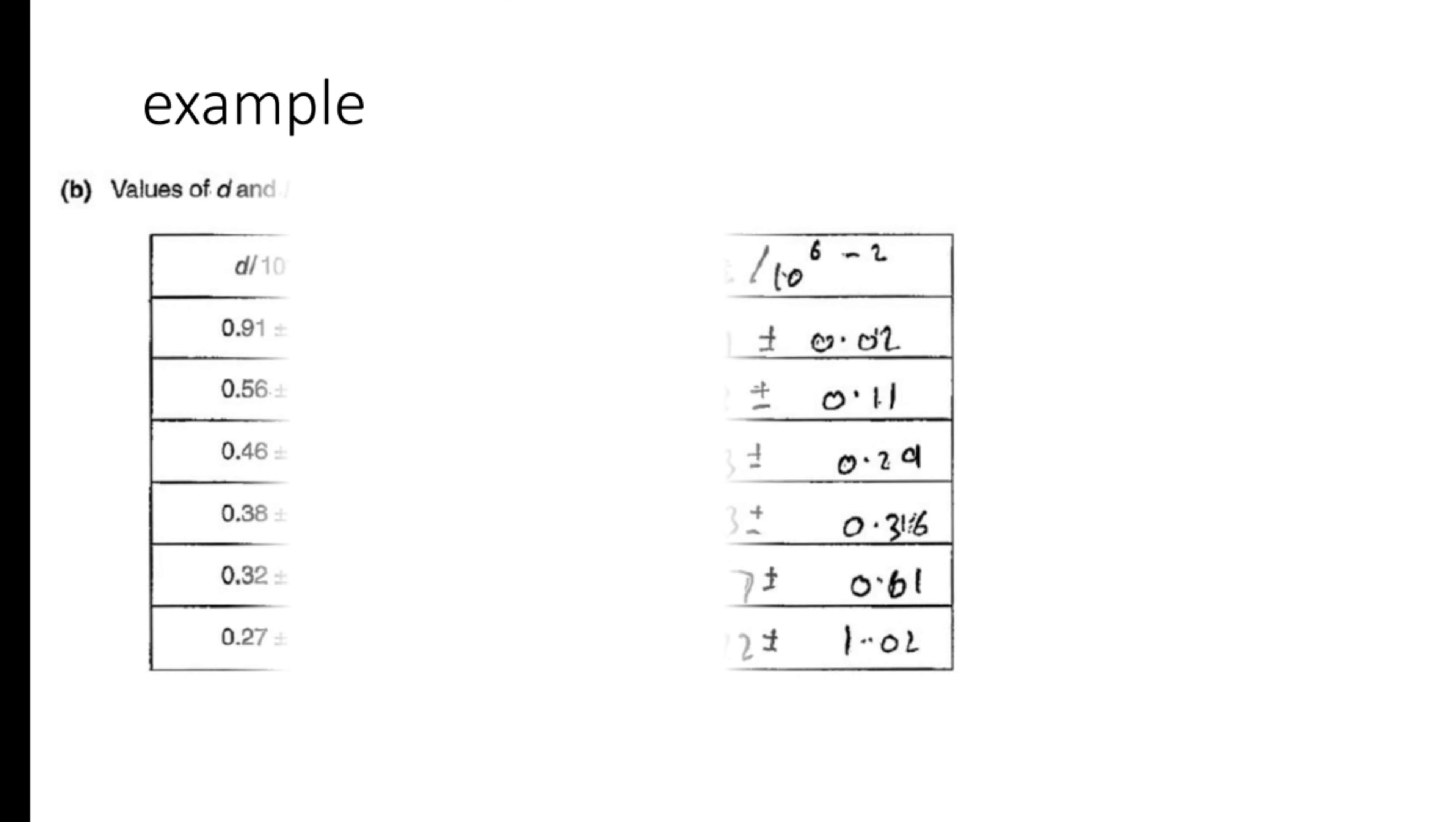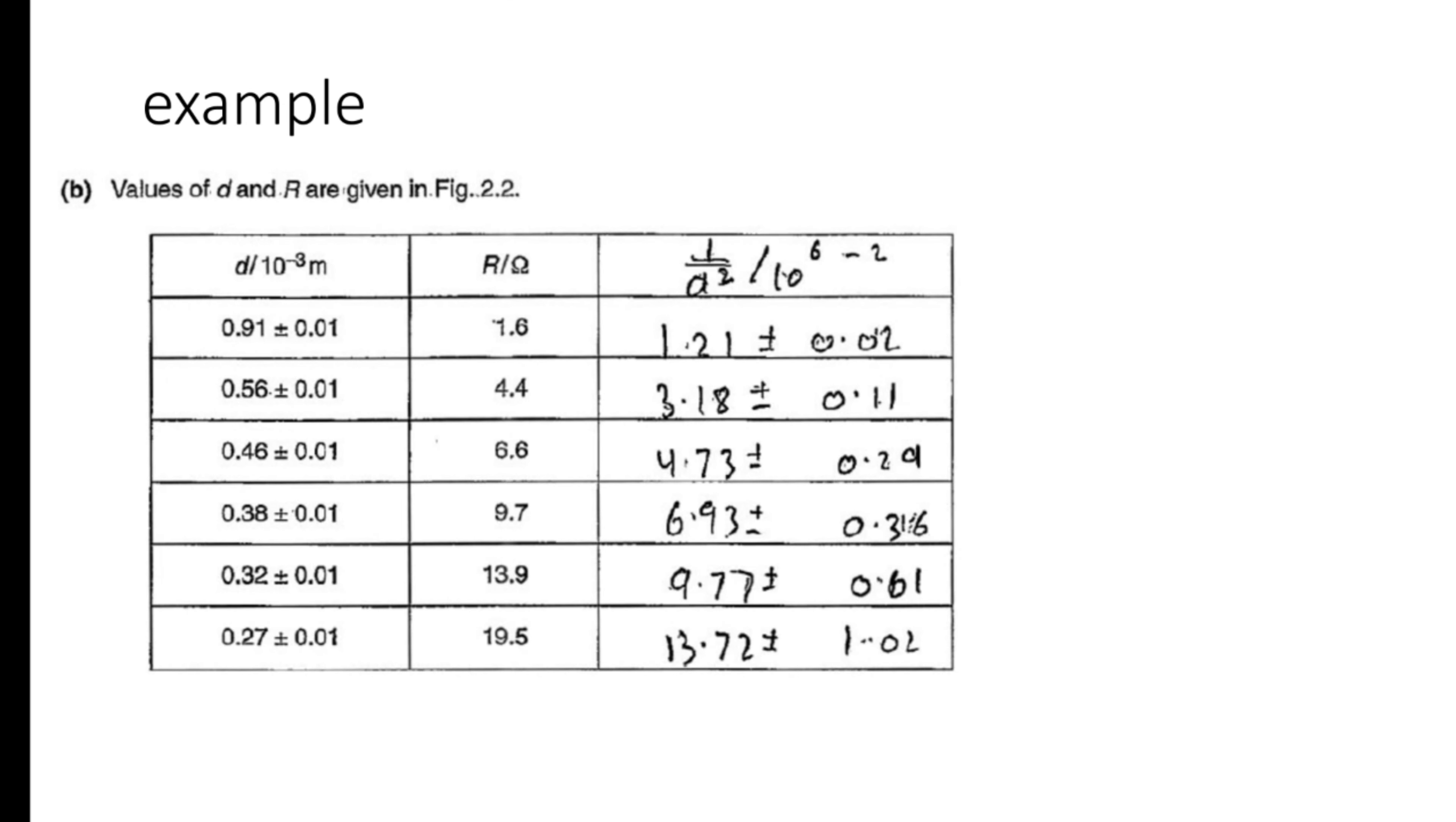So this is the example here. In this question you need to complete this table and this question is part B of question 2. If you can see the child has done all the calculations properly but if you see the last row there is 4 SF. So that is not acceptable.